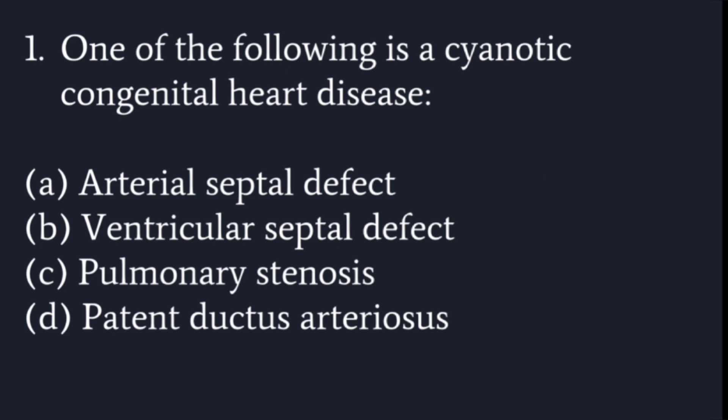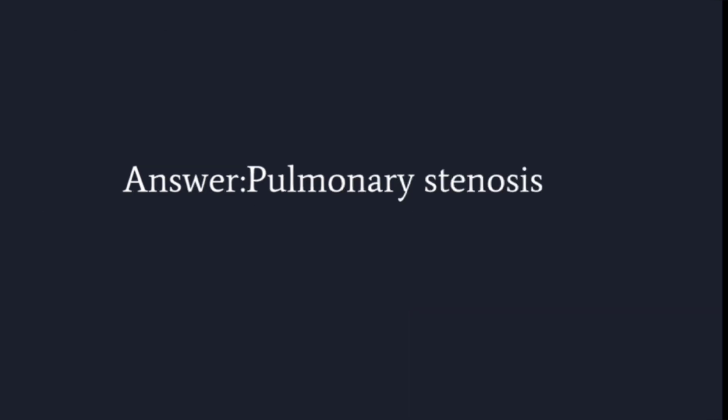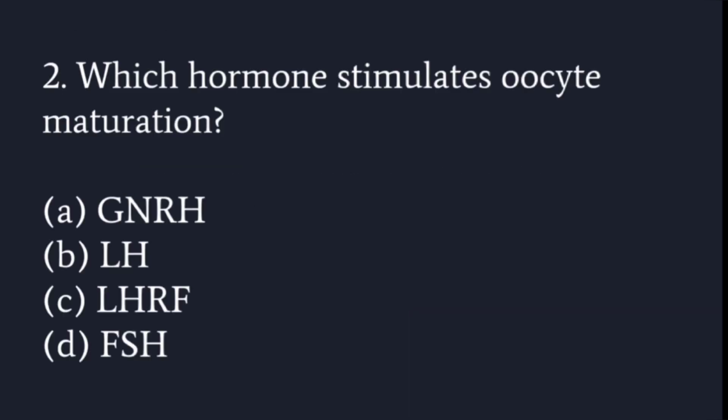The options are: atrial septal defect, ventricular septal defect, pulmonary stenosis, or patent ductus arteriosus. There are two types of congenital heart diseases — acyanotic and cyanotic. The answer is pulmonary stenosis.